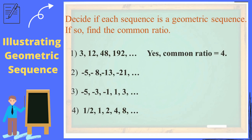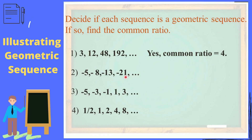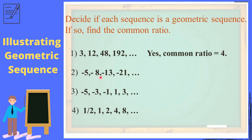What about in number 2? In the sequence negative 5, negative 8, negative 13, negative 21, and so on — in order to identify if it is a geometric sequence, we need to find the common ratio first. In number 2, we do not have a common ratio. So therefore, it is not a geometric sequence.